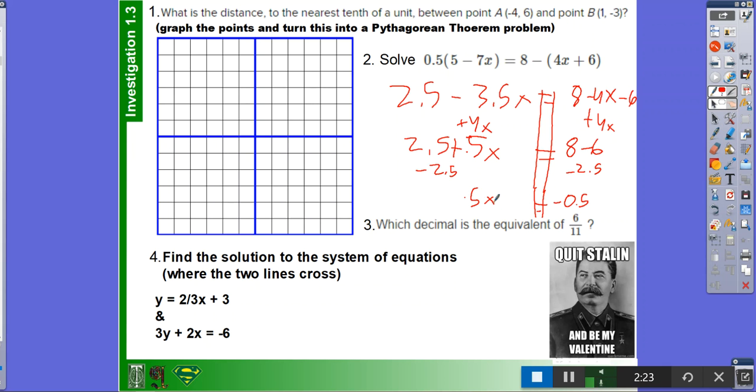And then you get negative 0.5 is equal to 0.5x. And you divide both by 0.5. And in the end, you get x is equal to negative 1. Because that's a negative.